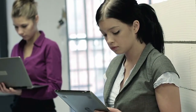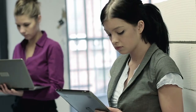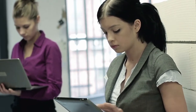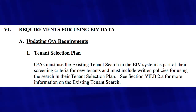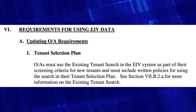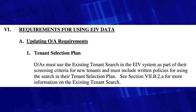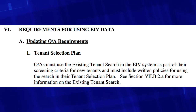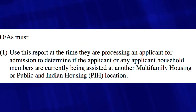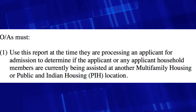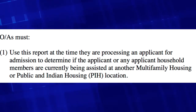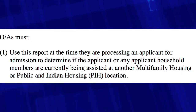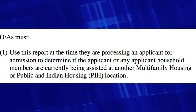Also, we find managers that only run the report on adult household members instead of all household members. The last notice on the multifamily side was H201306, and it states: owner agents must use the existing tenant search in the EIV system as part of their screening criteria for new tenants, and must include written policies for using the search in their tenant selection plan. It also states the owner agent must use this report at the time they are processing an applicant for admission to determine if the applicant or any applicant household members are currently being assisted at another multifamily housing or public and Indian housing location.